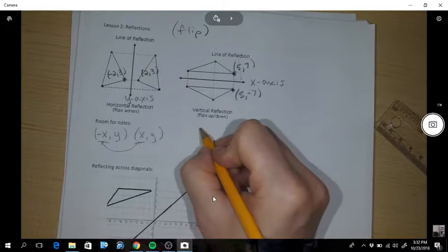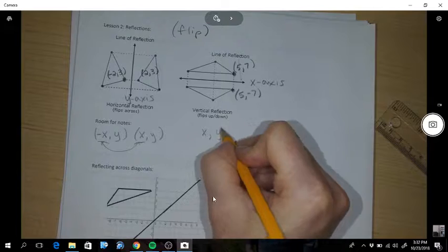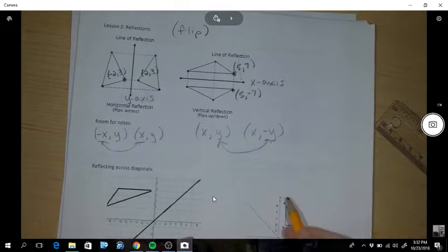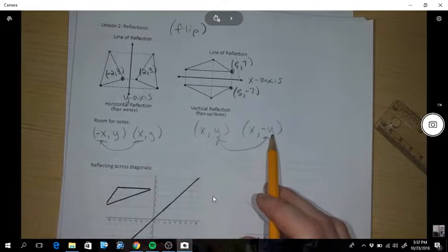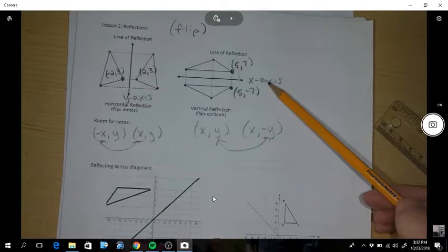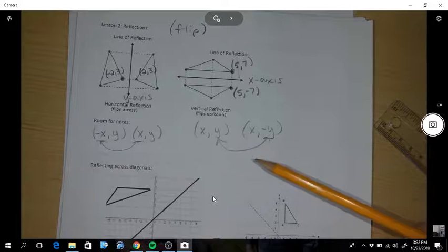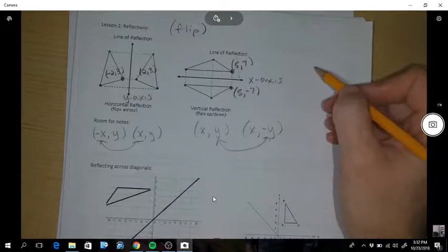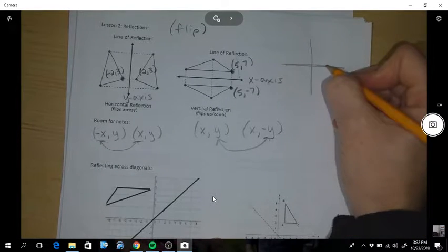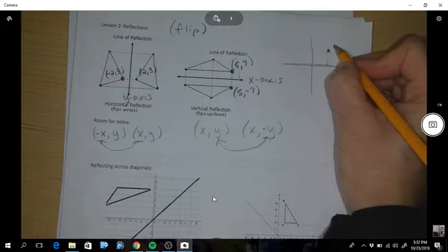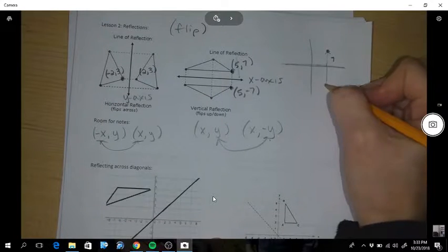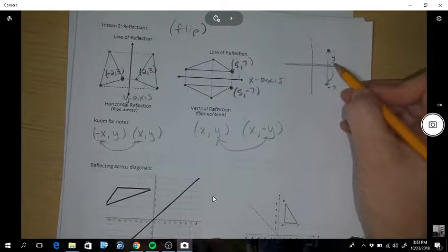So what's happening is the x is staying the same and now the y is changing. It's like an opposite relationship. If you flip over the y-axis your x changes. Flip over an x-axis your y value is changing. So if I'm saying that a point is up here at 7, then when you flip it, it also has to be the same height off.